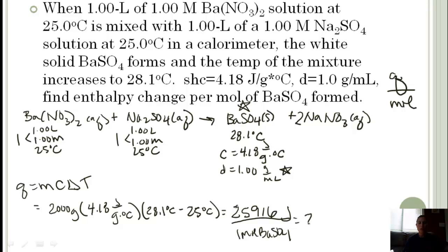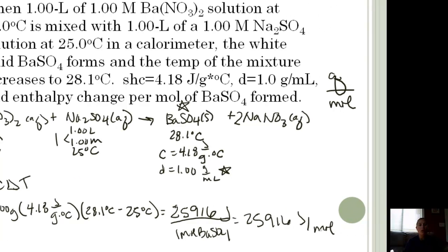Anything divided by 1 is just itself per mole. Now let's do significant figures. If I take a look, except for the density which is kind of a given, I see 3 everywhere. So I'm going to say 25,900 joules per mole.